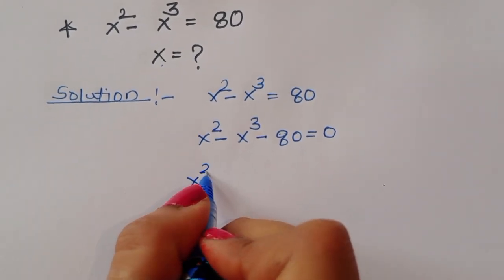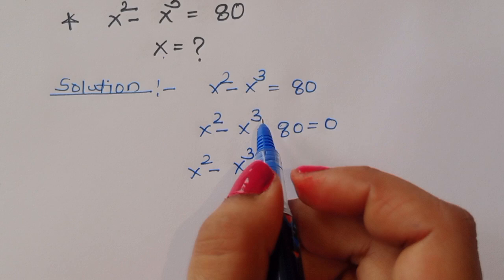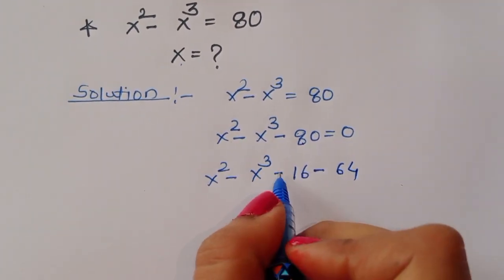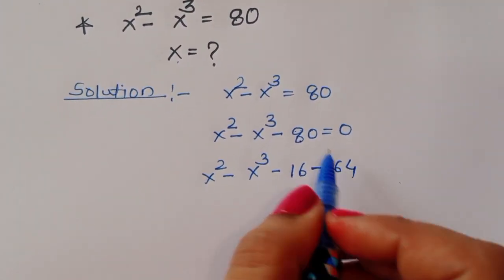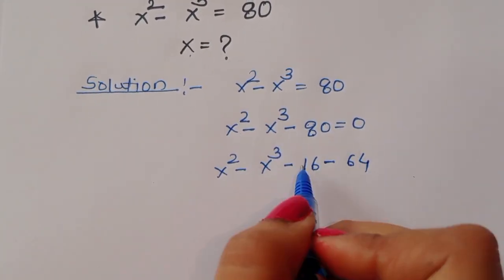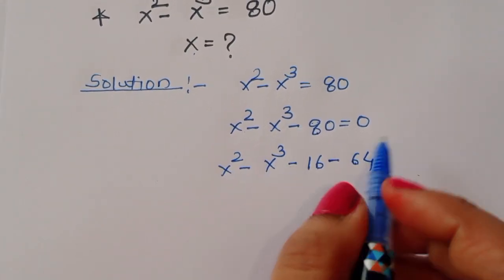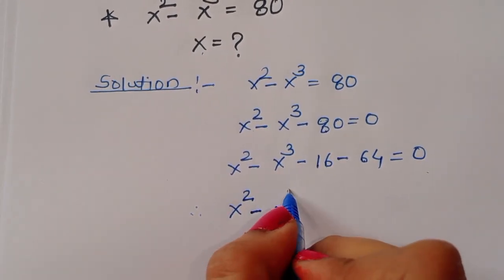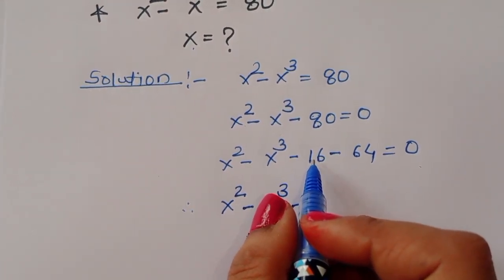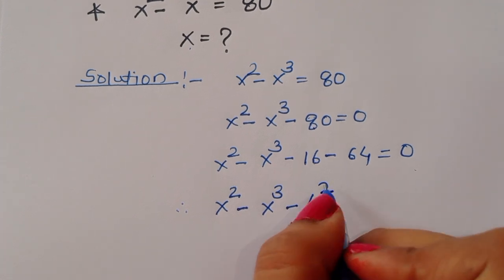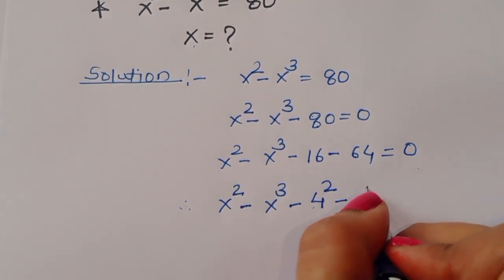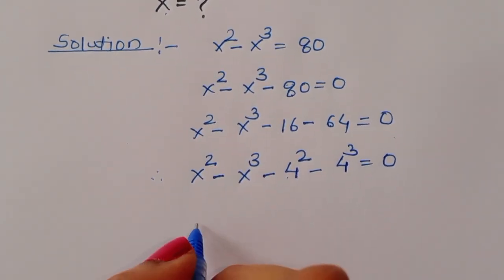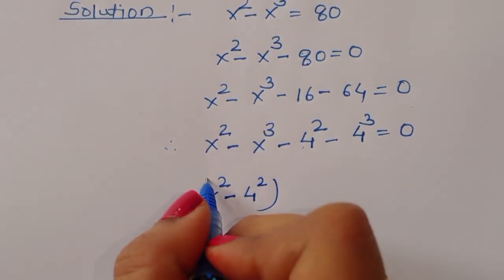Now, the 80 we can write as 16 plus 64. So x squared minus x cubed minus 80 becomes x squared minus x cubed minus 16 minus 64. We recognize that 16 is 4 squared and 64 is 4 cubed, so we rewrite accordingly.